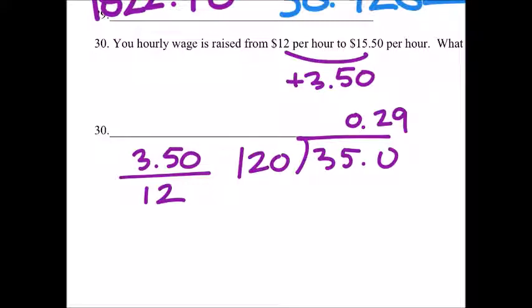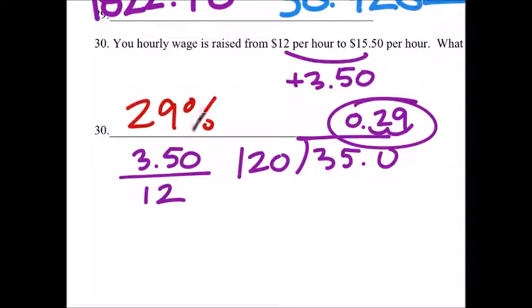So this is the decimal, but we want the percent, right? So we're just going to move the decimal over twice, or multiply it by 100, and that would be about 29%. So that's about a 29% increase.